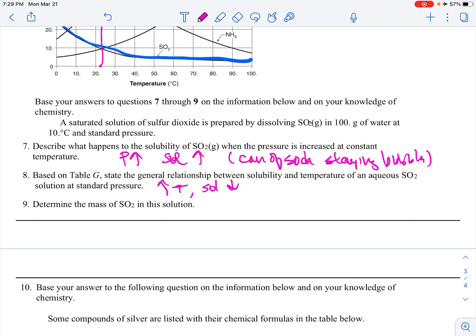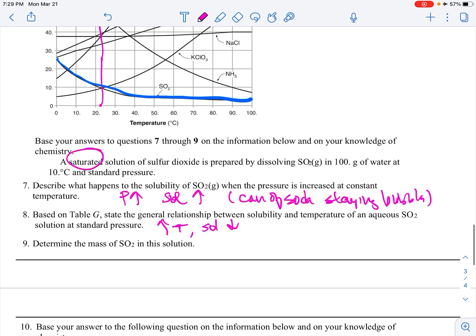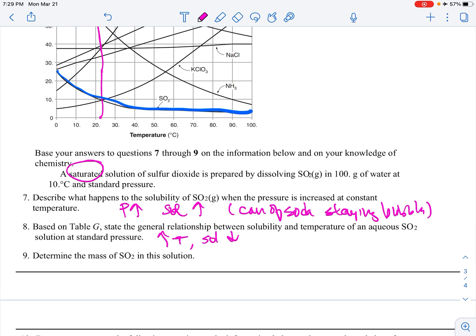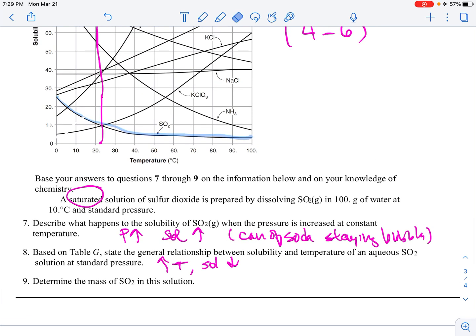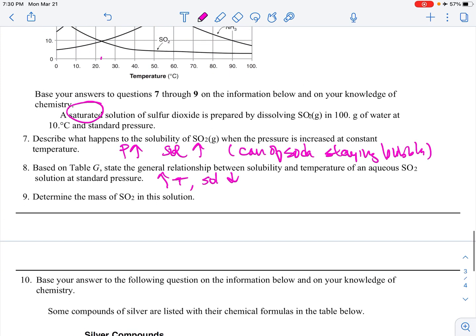Determine the mass of SO2 in the solution. Okay. So it says saturated. So that means on the line. 10 degrees Celsius. So SO2 at 10. I'm going to erase this to clean it up. SO2 at 10. Hmm. 15. Looks like it's about 15 to me. Maybe a little bit more. 16. So 16 grams. The answer key accepts anything between 15 and 18.